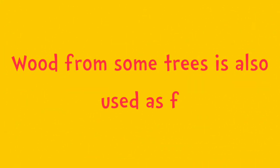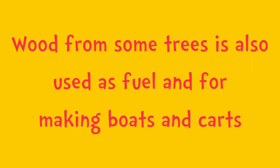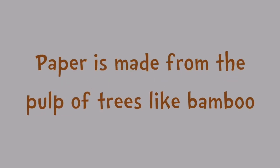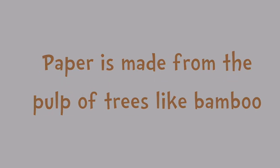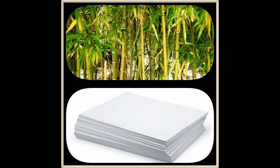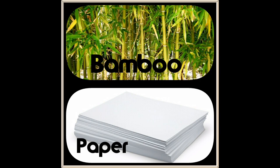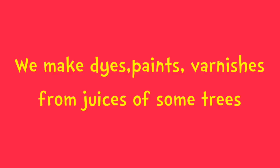Wood from some trees is also used as fuel and for making boards and carts. Paper is made from the pulp of trees like bamboo. We make dyes, paints, and varnishes from the juices of some trees.